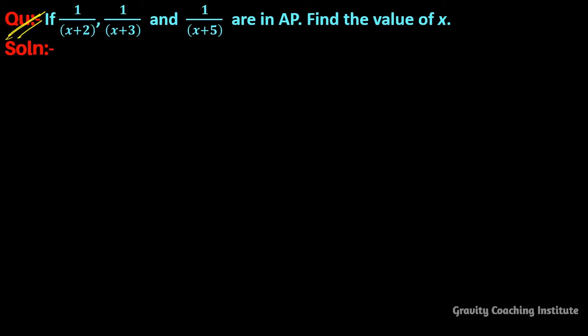The question is: if 1 upon x plus 2, 1 upon x plus 3, and 1 upon x plus 5 are in AP, find the value of x. So this question gives three terms which are in AP and we need to find the value of x.